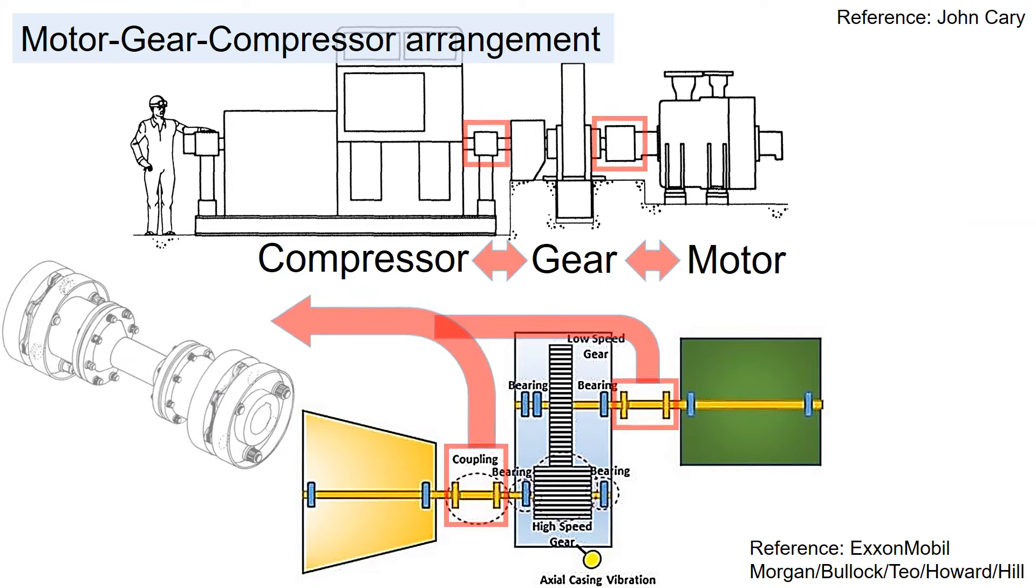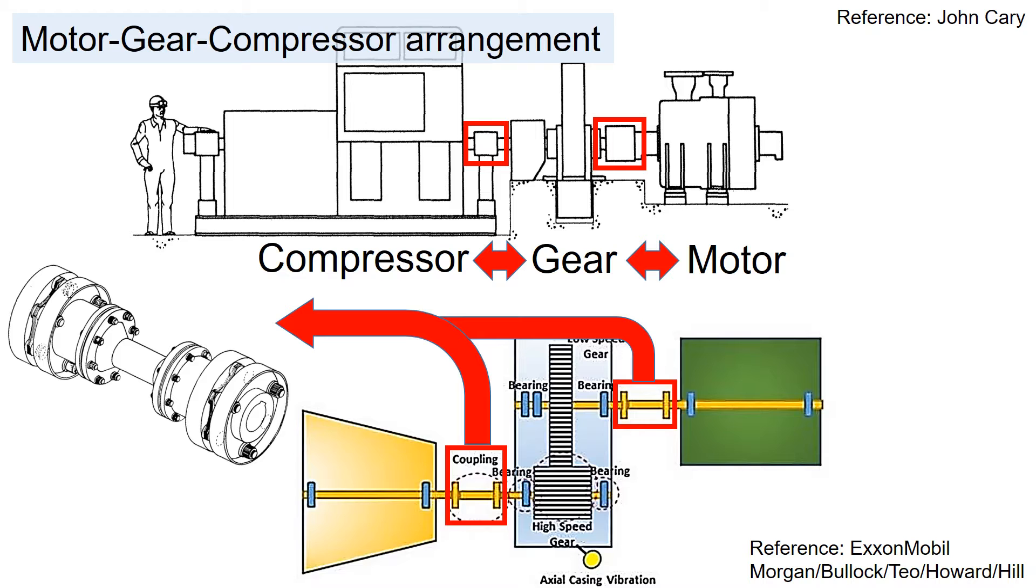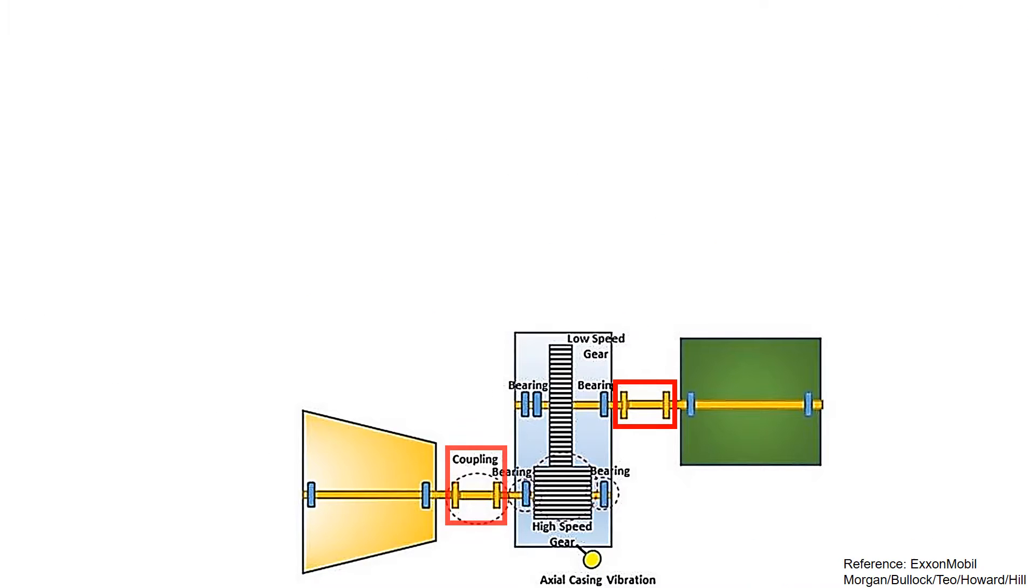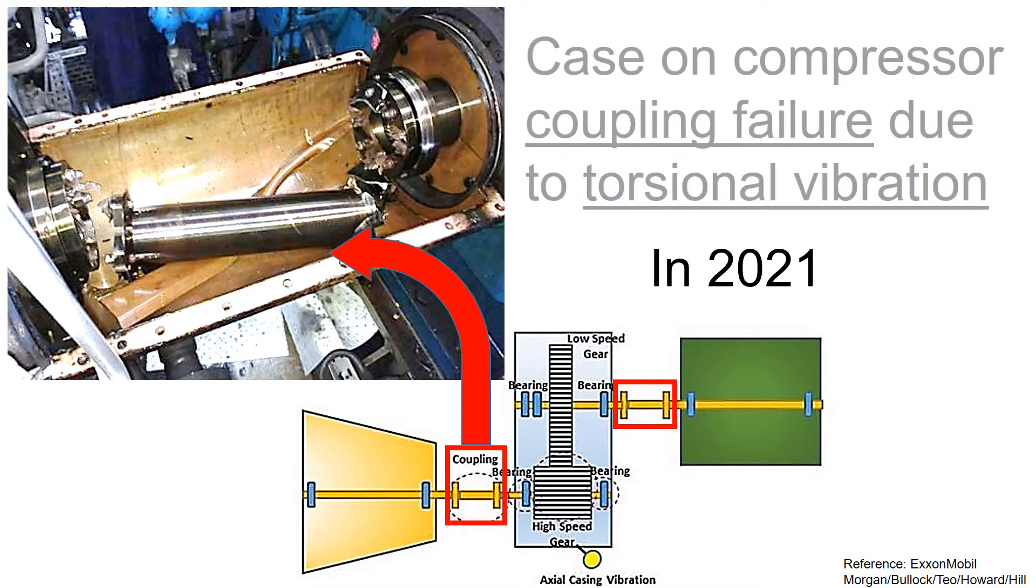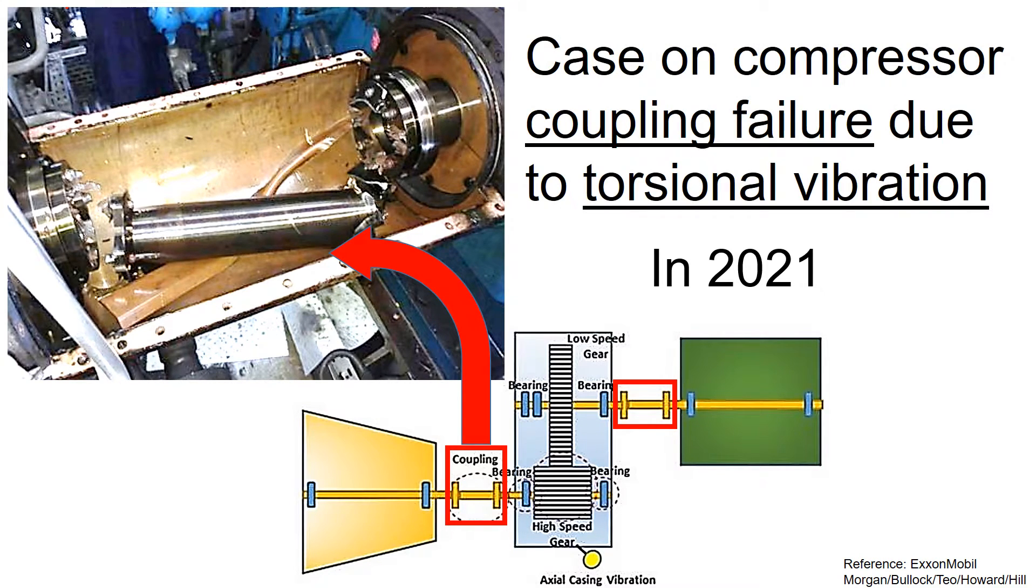The couplings connect gear and compressor, and gear and motor. For this case, the coupling broke as you could see in the figure. This coupling damage is due to torsional vibration.